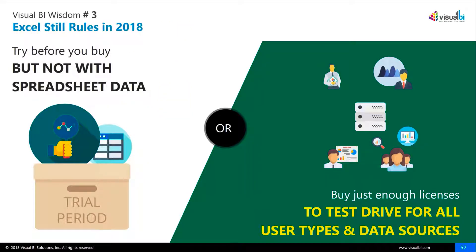We are in 2018 and Excel still rules — most assessments are done with spreadsheet data. A strong recommendation we would like to propose: you should try before you buy. If policy prevents it, buy just enough licenses — you don't have to buy for the whole company. Buy just enough to test-drive for all user types and data sources, so you do not have buyer's remorse or a strategy remorse six months later saying 'we made a bad decision.'